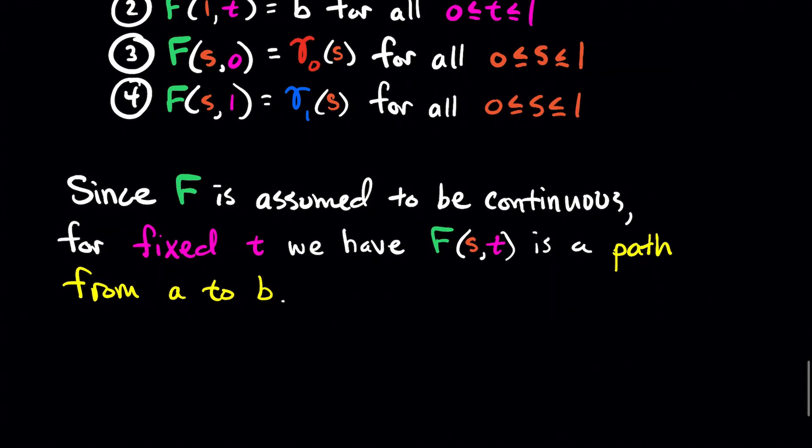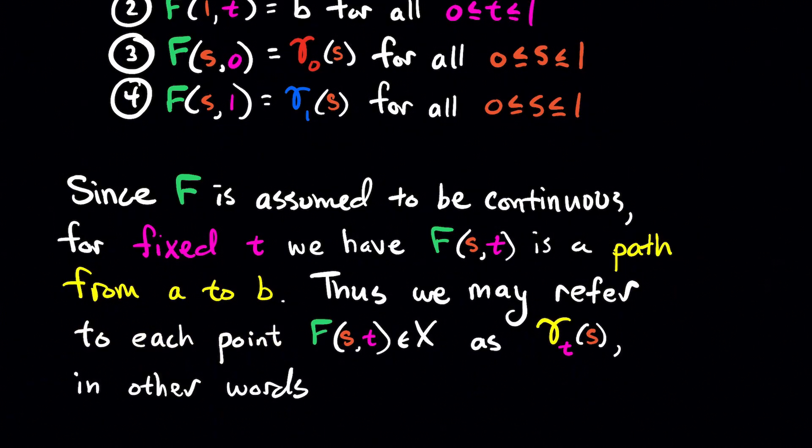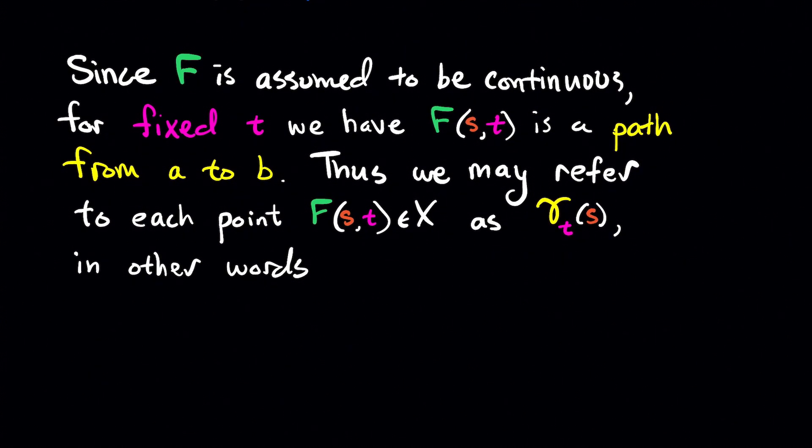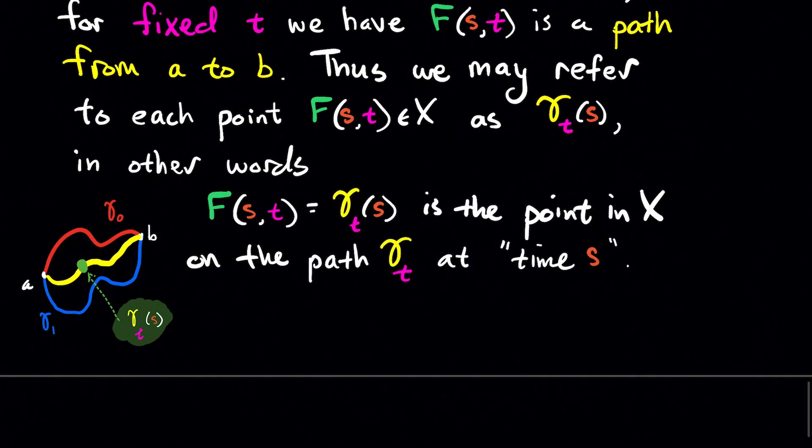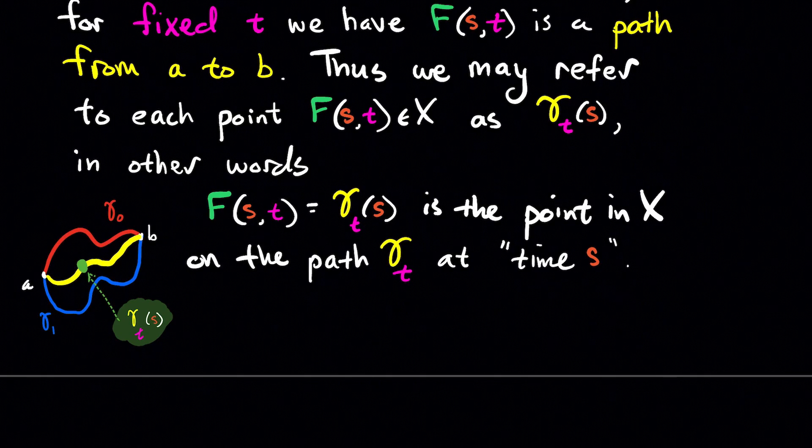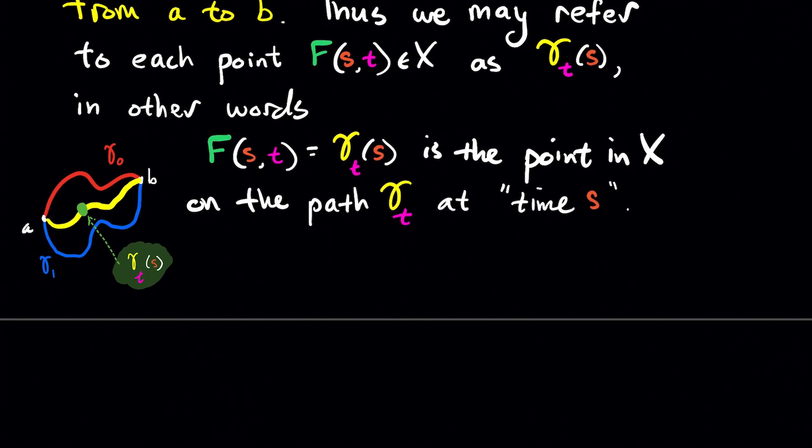Now since F is assumed to be continuous for a fixed input T, we have that F of (S,T) is a path from A to B. Thus we may refer to each point F of (S,T) as just gamma T of S. In other words, what I'm saying is F of (S,T) is equal to gamma T of S, and that's going to be the point in X on the path gamma T at time S. So the homotopy just picks out points along our curves in the family. In that case, that particular green point is the output of this function F of (S,T). So it picks out some point on one of the curves in our family that deforms gamma 0 into gamma 1.